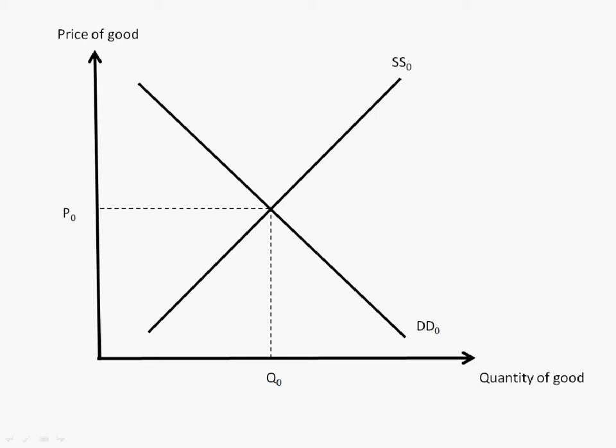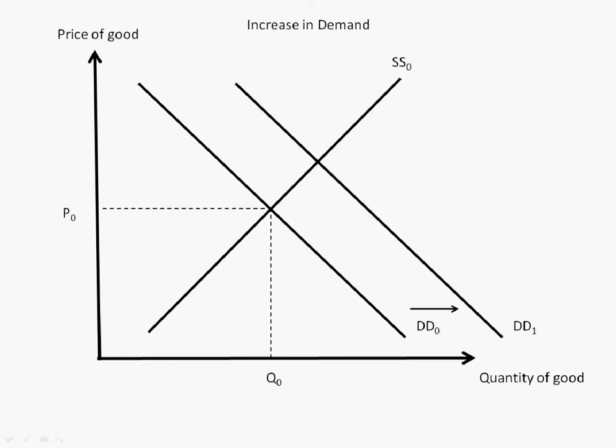When the demand of goods increases, the demand curve will shift to the right. DD1 will be the new curve. This will result in a shortage represented by QSQD.